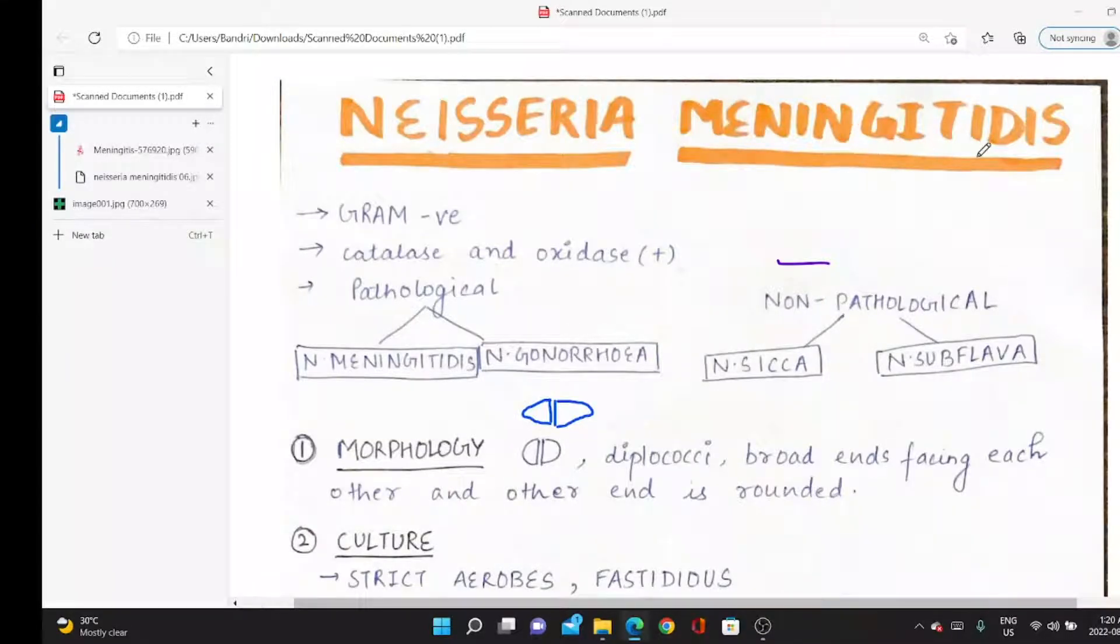This word means inflammation of meninges. Meninges are the membranes which protect the brain and spinal cord: arachnoid mater, pia mater, and dura mater.